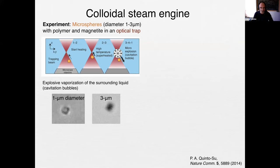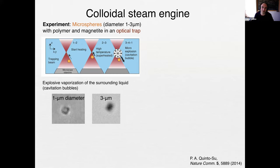The second experiment is a colloidal steam engine, done in Mexico. The idea is to emulate what happens in an old-fashioned train steam engine. The particle contains magnetite, and as it gets closer to the trap center, it increases the fluid temperature, creating a micro-explosion — a cavitation bubble — that pushes the particle out of the focus. Then the particle comes back. With a one-micron particle the cycle is fast; with a three-micron particle the cycle time is slower but the particle displaces a larger distance.